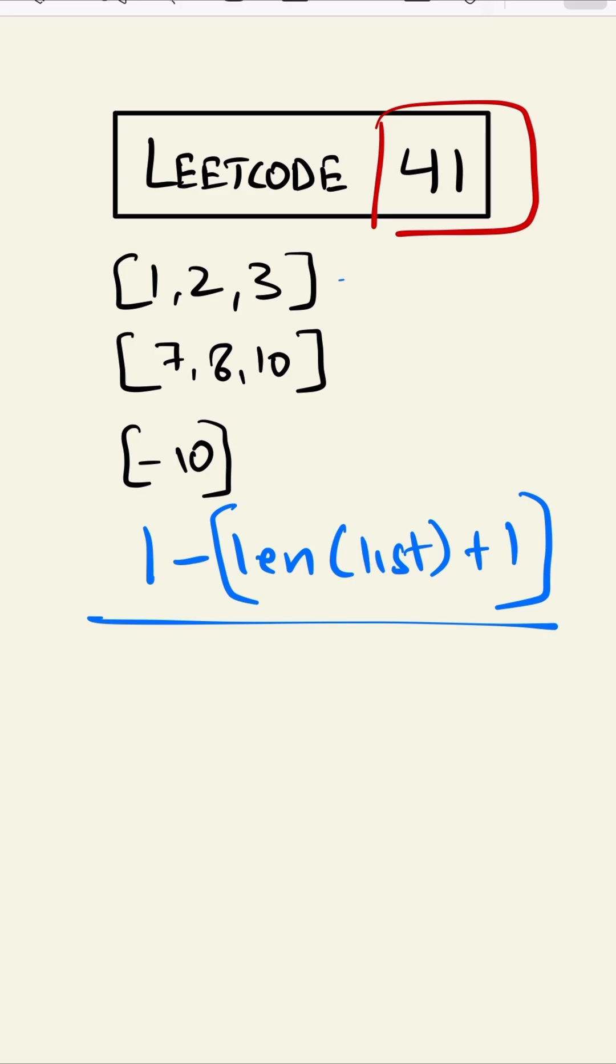Let us take an example. In this, the length is 3, so the number would lie between 1 to 4, and yes, the number is 4, the first missing number.